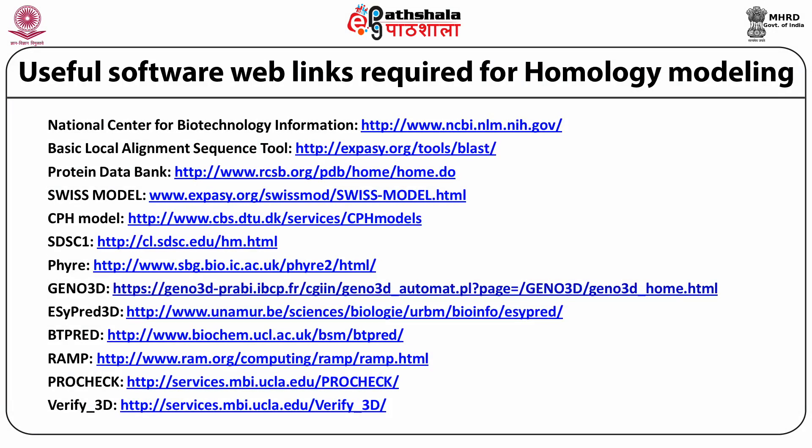There are a number of useful software and web links available for homology modeling. You can start by retrieving and analyzing sequences on the National Center for Biotechnology Information (NCBI). Tools for aligning sequences include the Basic Local Alignment Search Tool (BLAST). Coordinates of protein structures can be obtained from the Protein Data Bank (PDB). Software for modeling includes Swiss-Model, CPH Model, SDSC1, PhiRay, Geno3D, EasyPred3D, BTPred, and RAM. To validate protein structures, one can use ProCheck and Verify3D.